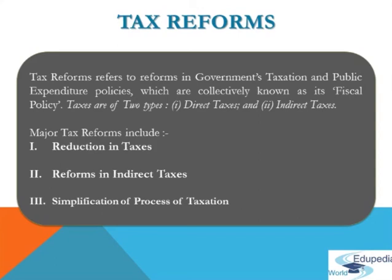The major tax reforms made include reduction in taxes. Since 1991, there has been a continuous reduction in income and corporate tax, as high tax rates were an important reason for tax evasion. It is now widely accepted that moderate rates of income tax encourage savings and voluntary disclosure of income. Considerable reforms were also made in indirect taxes to facilitate establishment of a common national market for goods and commodities. In addition, many procedures were simplified to encourage better compliance on the part of taxpayers.